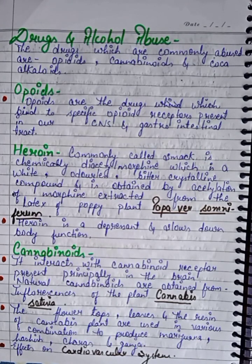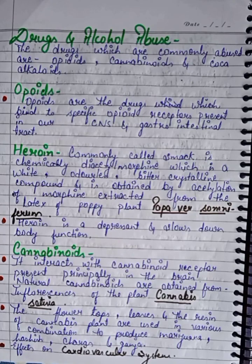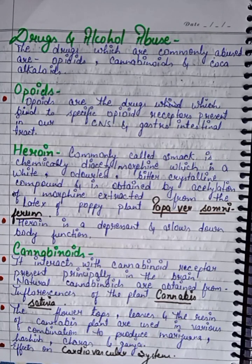The flower tops, leaves, and resins of the cannabis plant are used in various combinations to produce marijuana, hashish, charas, and ganja. These substances affect our cardiovascular system.